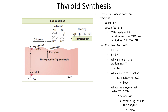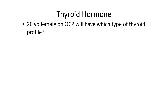Drugs such as PTU inhibit 5-prime deiodinase — that is the peripheral conversion that PTU inhibits. Both PTU and methimazole are hepatotoxic, and their primary mechanism of action is to block thyroid peroxidase.